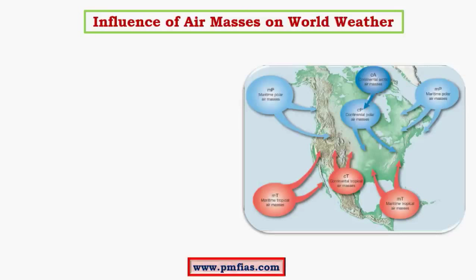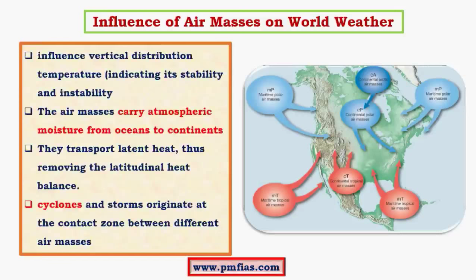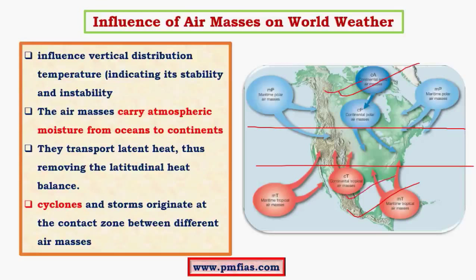The most important part is the influence of airmasses on world weather. The temperate region acts as a zone of convergence between tropical and polar airmasses, and this zone sees significant weather changes due to their interaction — this is how airmasses affect the climate of temperate regions. Their influence on polar and tropical regions is comparatively lower, mostly bringing very cold or very warm weather to surrounding areas. They help in the transport of heat and moisture between oceans and continents, including the transfer of latent heat, contributing to latitudinal heat balance. They also play a significant role in the formation of tropical cyclones.